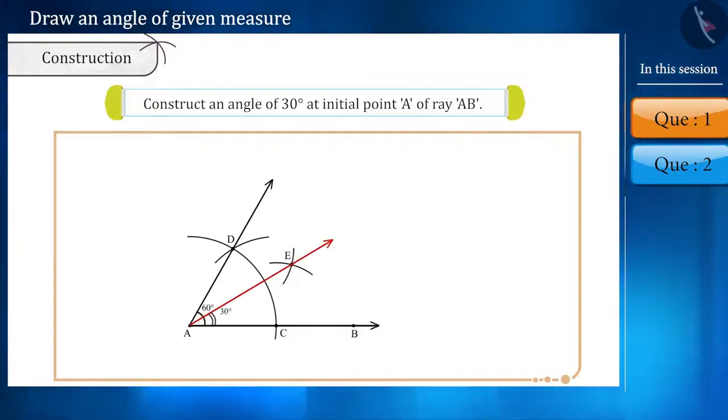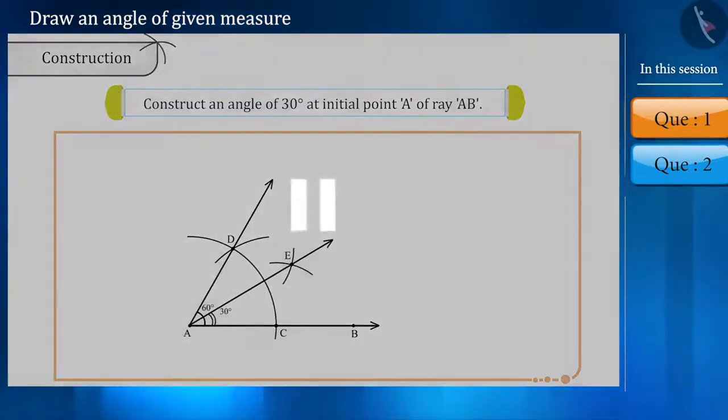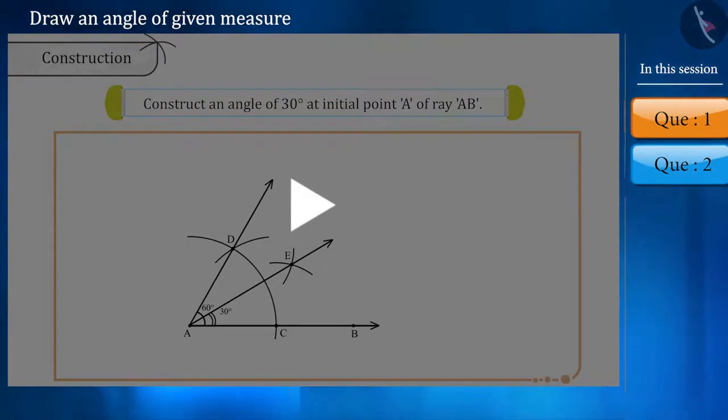This ray, AE, is angle bisector of angle DAC and angle EAC is 30 degrees. Before moving on to the next question, find out if we have to construct an angle of 15 degrees, what will we do? You may pause the video and think of an answer.